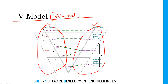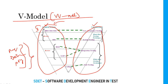Verification talks about the development process and validation talks about the testing process, and both go in parallel. Verification means checking the software before implementation — testing requirements, testing design documents, testing programs. Before the software is ready, we are doing some testing on documentation, and that is verification. Verification checks whether we are following the correct process or not.